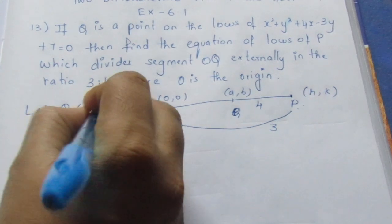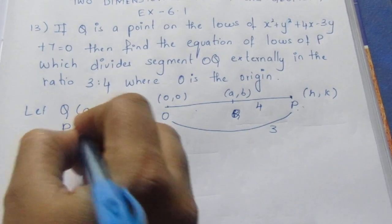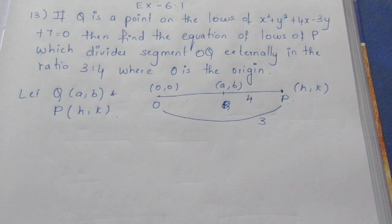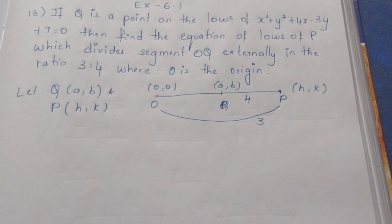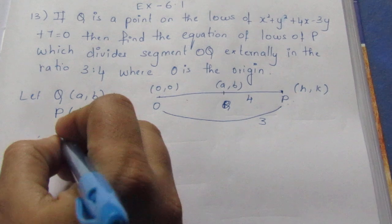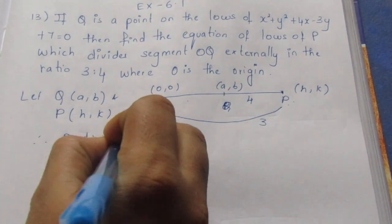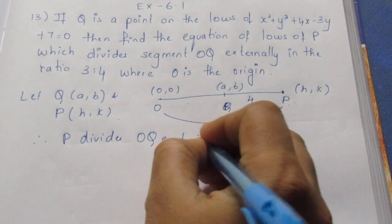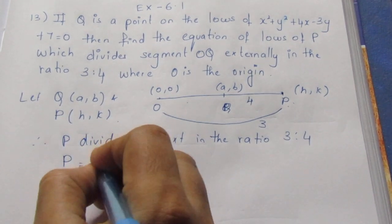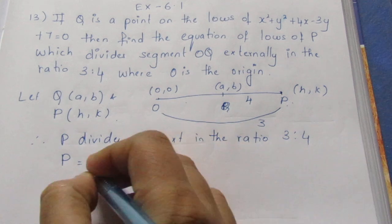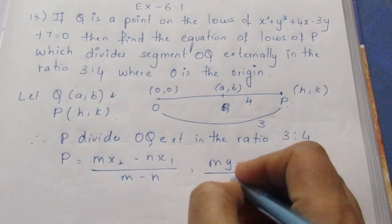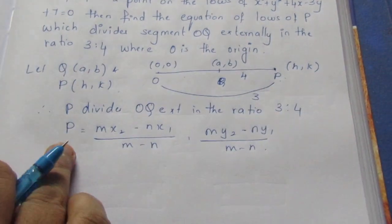Let Q be point (a, b) and P be point (h, k). Now we have to find external division. We can find the formula — internally we use plus, and externally we use minus. So P divides OQ externally in the ratio 3 is to 4. The formula is: (mx₂ minus nx₁) by (m minus n), and (my₂ minus ny₁) by (m minus n). We find the P value h, k.